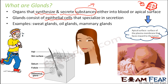So just remember the simple thing: glands are those organs which can prepare something and then secrete it out. The two ways they can do this are: one, secrete it directly to the blood; or two, secrete it on the apical surface of specific cells. This is all about glands.